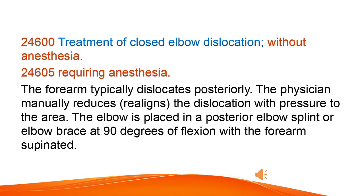Treatment of closed elbow dislocation, without anesthesia and requiring anesthesia. The forearm typically dislocates posteriorly. The physician manually reduces and realigns the dislocation with pressure to the area. The elbow is placed in a posterior elbow splint or elbow brace at 90 degrees of flexion with the forearm supinated.